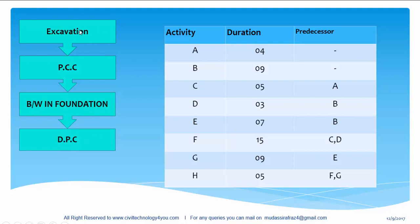Excavation is an activity and we need some time to finish this activity. The amount of time that we require to finish the activity is called duration. In real time some activities need to wait until others finish. The relationship between activities is called predecessor and successor. Here the predecessor activity of PCC is excavation, and the successor activity of excavation is PCC. Hope you understand activity, duration and predecessor.